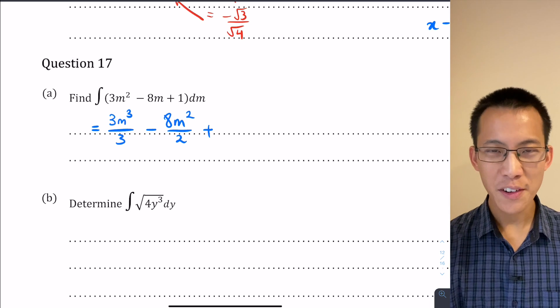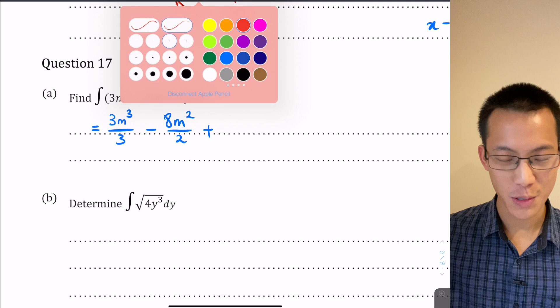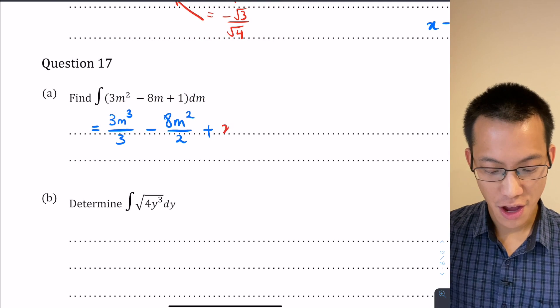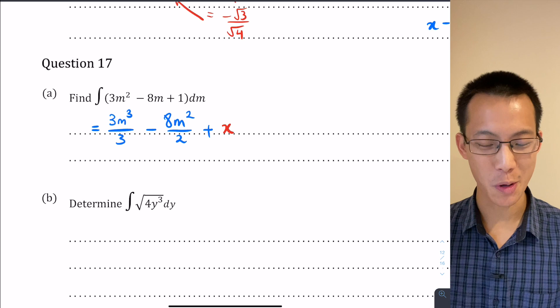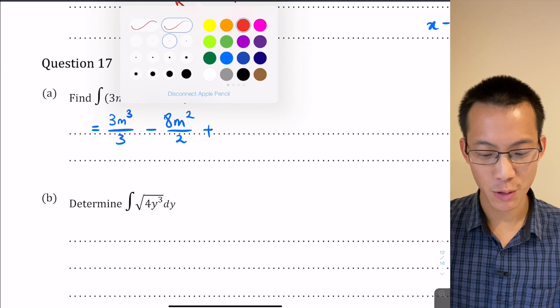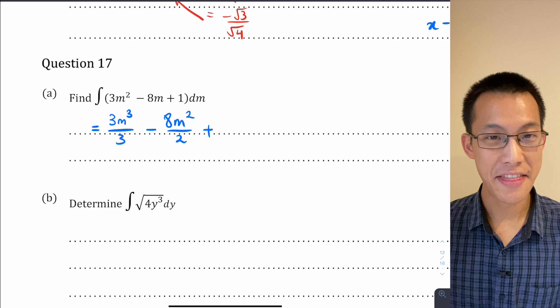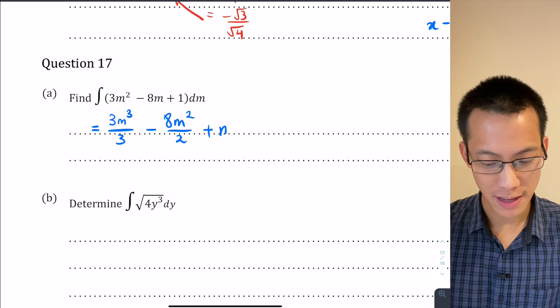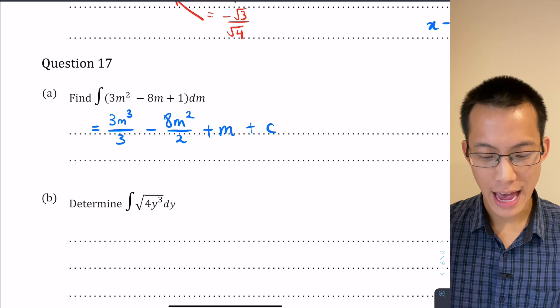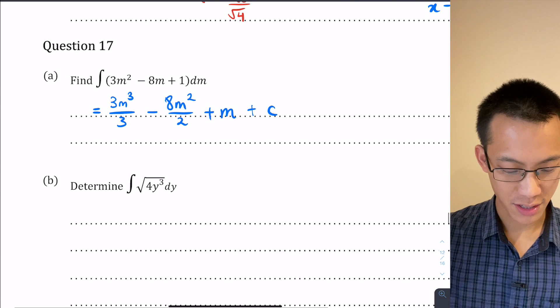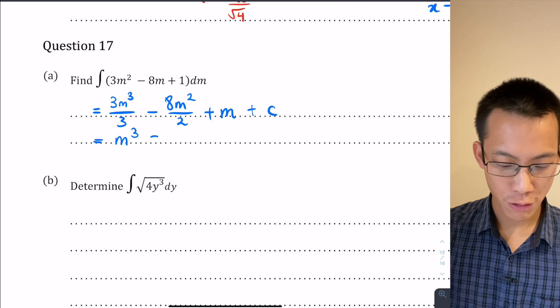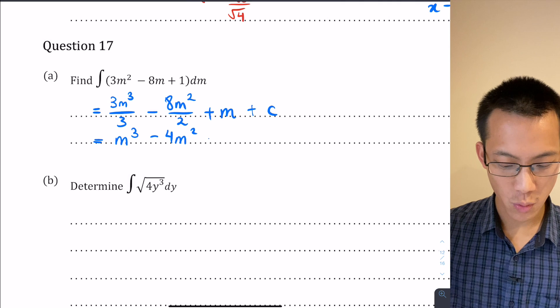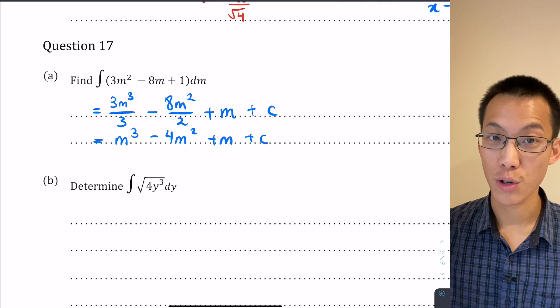Now a lot of you instinctively, because you're so used to integrating with respect to x, you wrote down plus x, because a plus 1 usually turns into a plus x. However, we're integrating with respect to m, that's the variable that we're interested in, so it should be plus m. And then lastly we have a constant of integration. So we can tidy this up just a teeny bit by cancelling - there's an m³, there's 4m², and then the terms that you saw before.